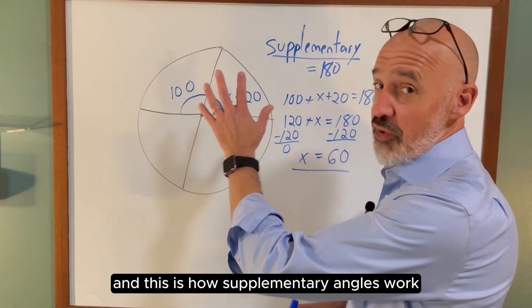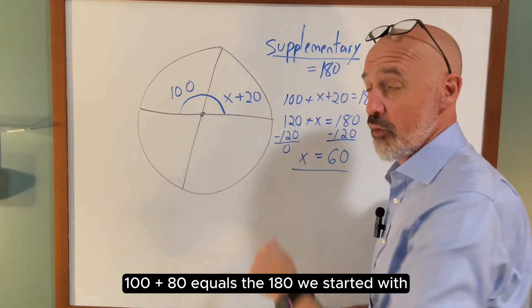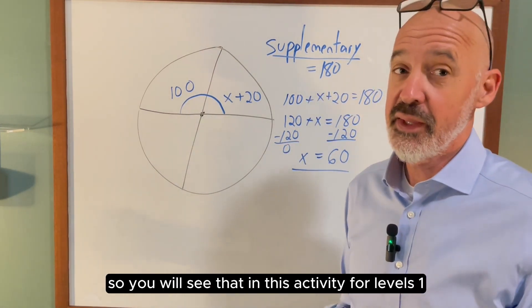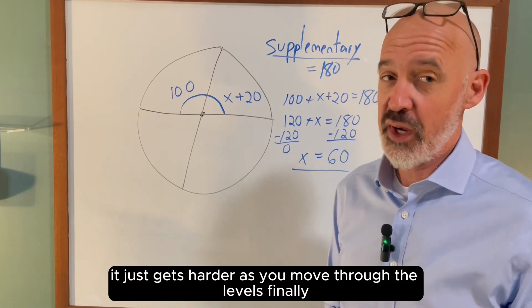And this is how supplementary angles work: 100 plus 80 equals the 180 we started with. So you will see that in this activity for levels one, two, and three—it just gets harder to move through the levels.